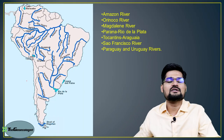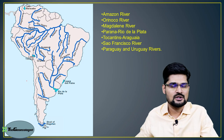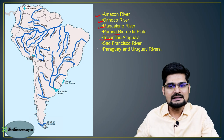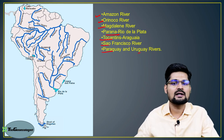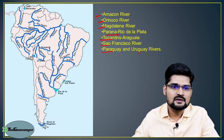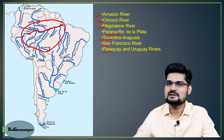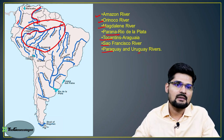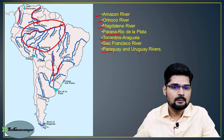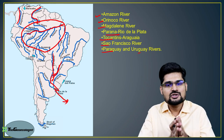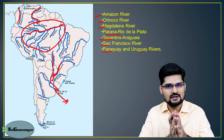Regarding the river system of this realm: we have the Amazon River, Orinoco River, Magdalena, Piranha River, Tocantins, San Francisco, Paraguay and Uruguay Rivers. The biggest catchment area is the Amazon basin with its tributaries. In the north you have the Orinoco and Magdalena, and then Paraguay, Parana and Uruguay Rivers, which fall into the Atlantic Ocean. These are the major river systems of this realm.